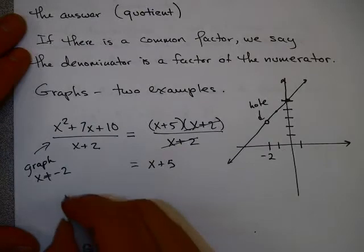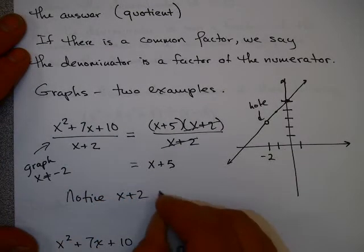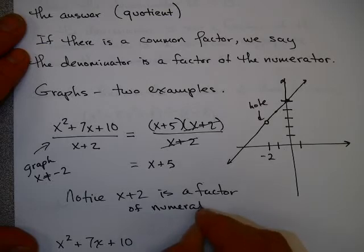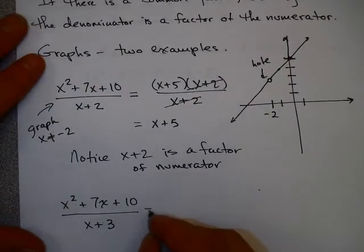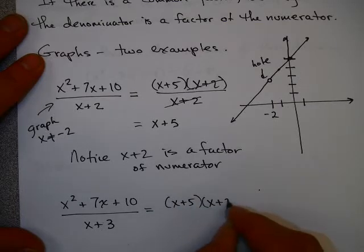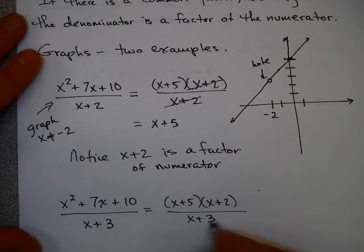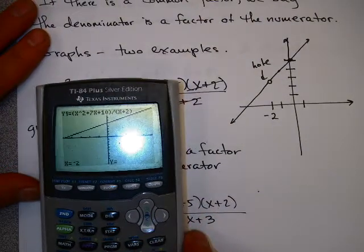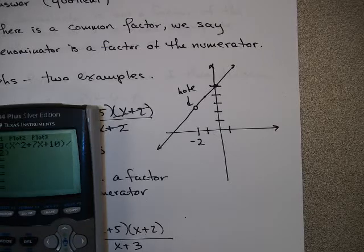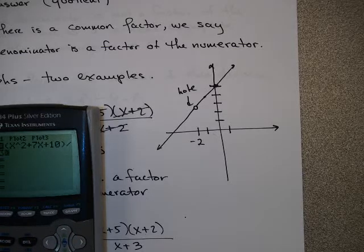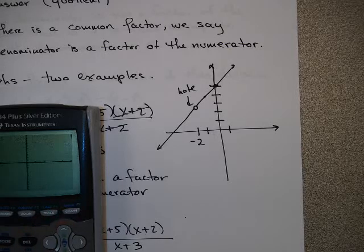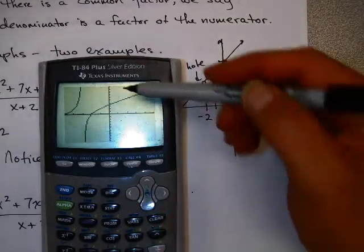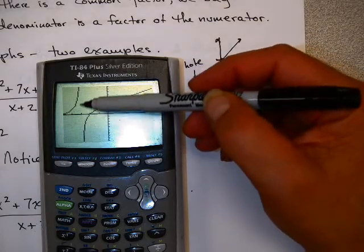Now in this case, notice x plus 2 is a factor of the numerator. What if it's not a factor of the numerator? Like this one. If you factor the top here, you still get x plus 5 times x plus 2, but this is over x plus 3. What happens in that case? Well I'm going to go back to my calculator and have it do this one for me. So I'm just going to go over to this, y equals, and change this to x plus 3. I'm going to take the same window, and I'm going to graph this. Here you'll notice a very, very different graph than the one that we saw before. You'll notice that there is an asymptote at negative 3.